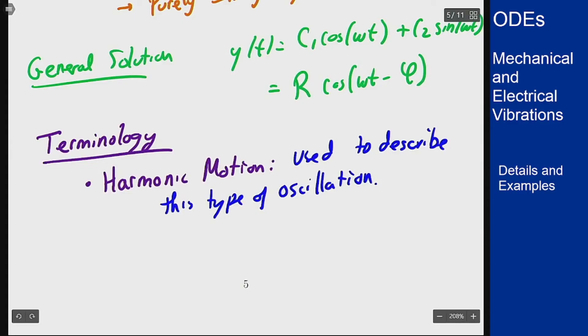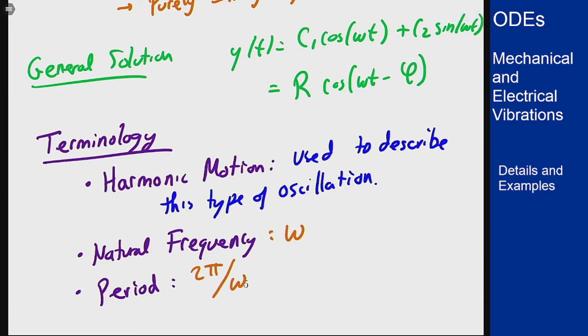So the natural frequency, this is the omega from above. This is the frequency at which this system oscillates. Related to that is the period, or how long it takes a thing to do one full cycle, which will be 2 pi divided by omega. If omega is 1 at frequency of 1, my period is 2 pi, and this is how those things relate to each other.